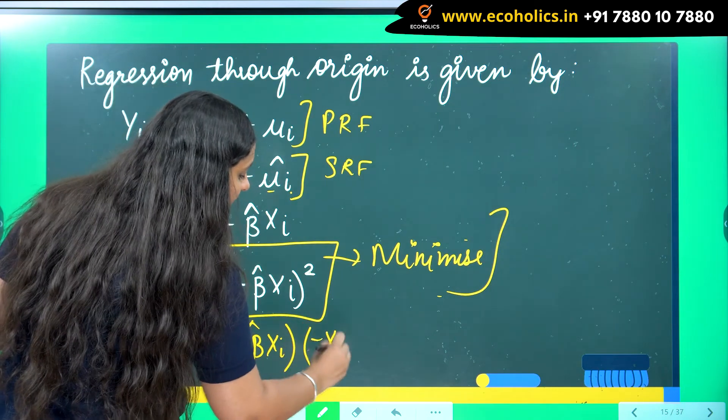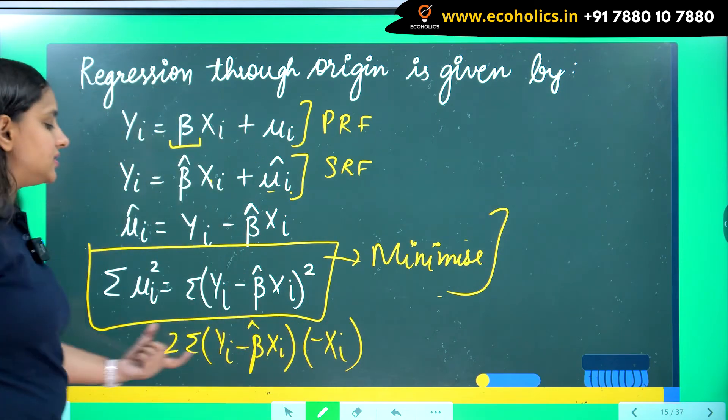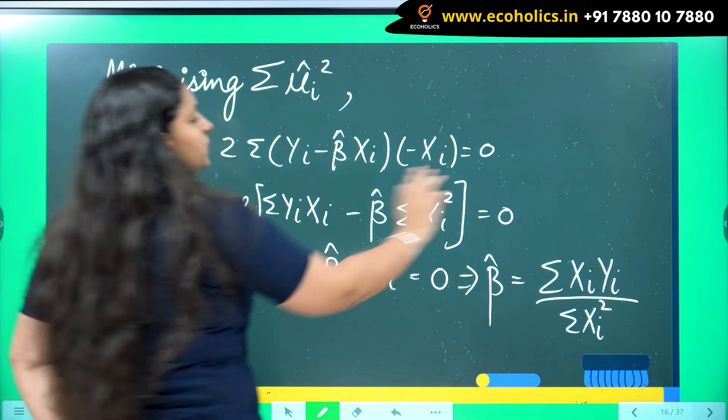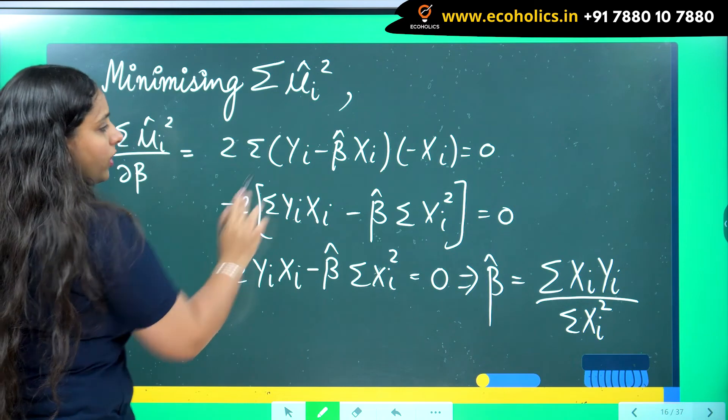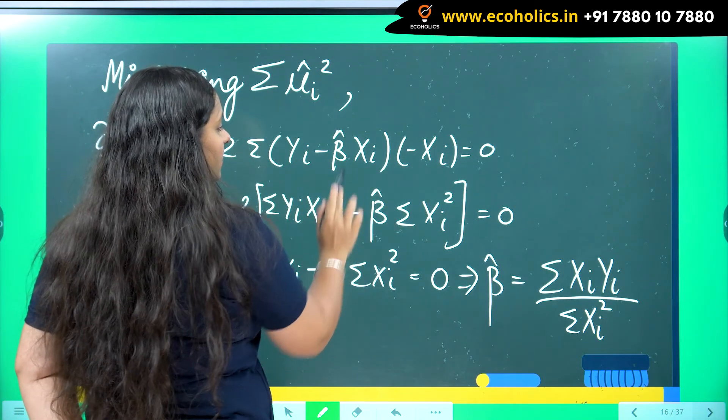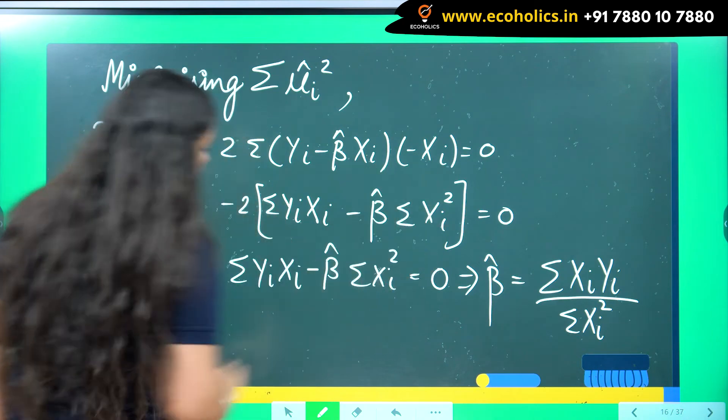When I do the derivative of the terms inside this bracket with respect to beta hat, I will be getting minus xi. So this is the derivative. I have written it on the next page here. Now I take minus here with 2. I am opening the brackets. So summation yi xi minus beta hat summation xi square.